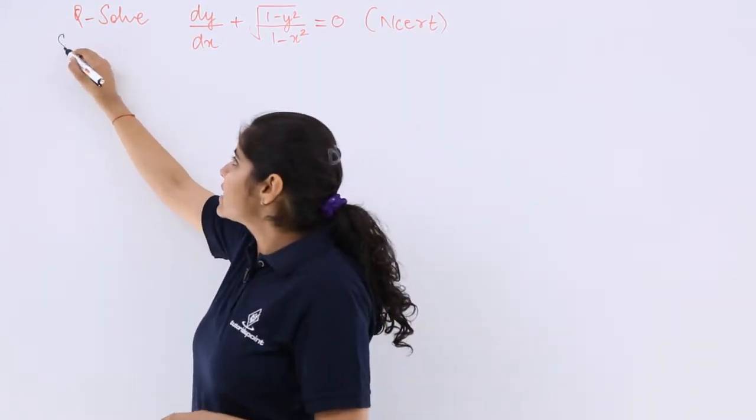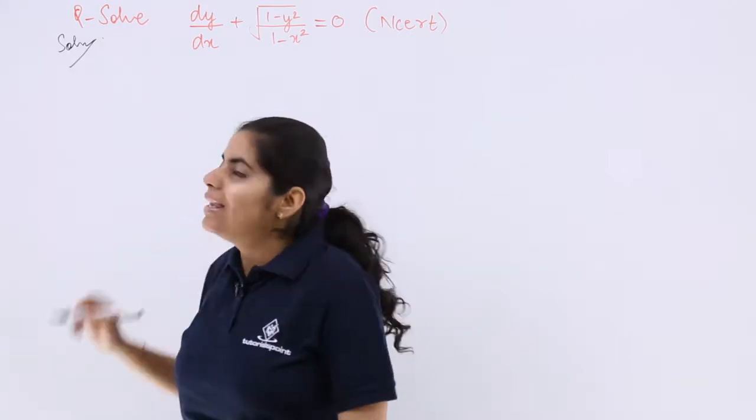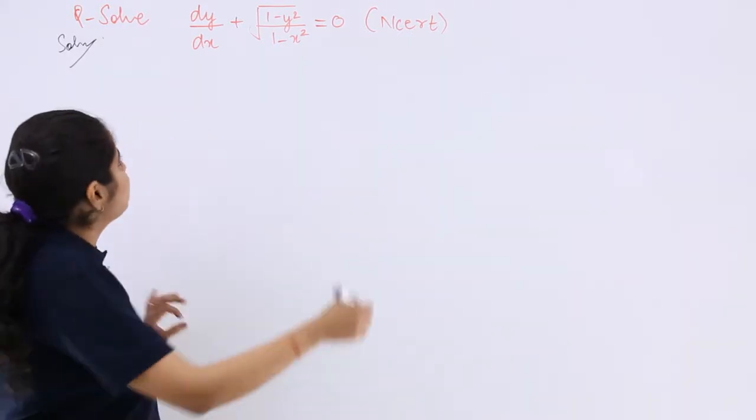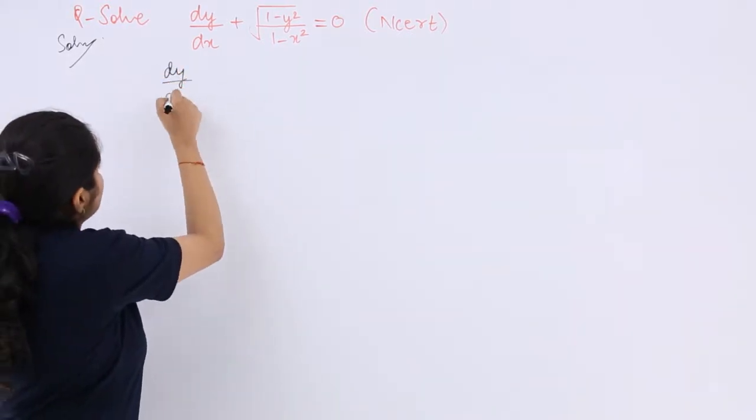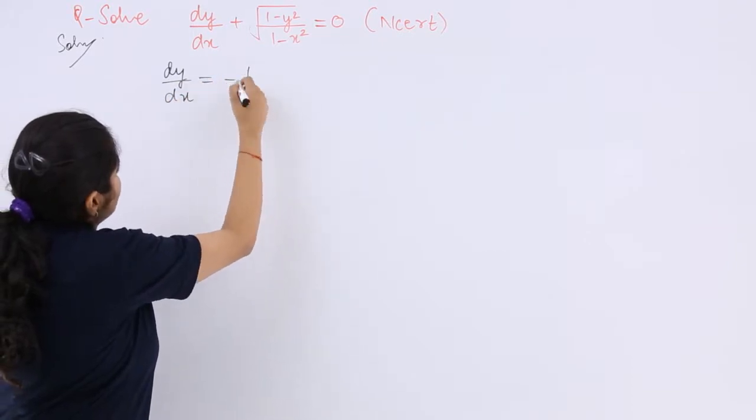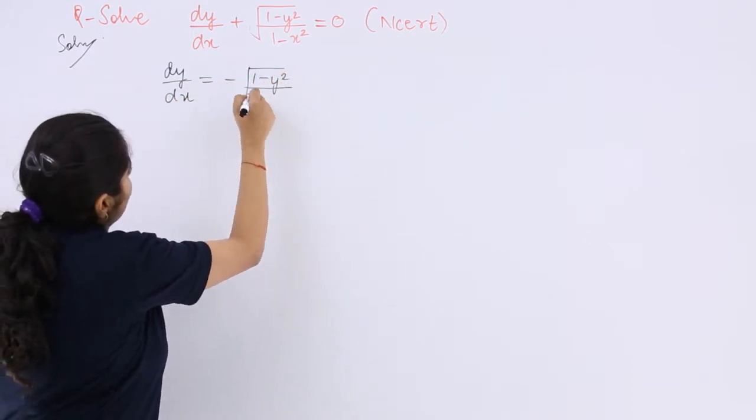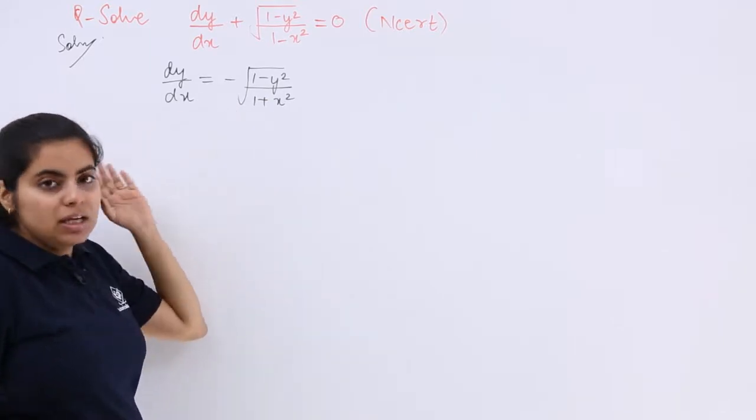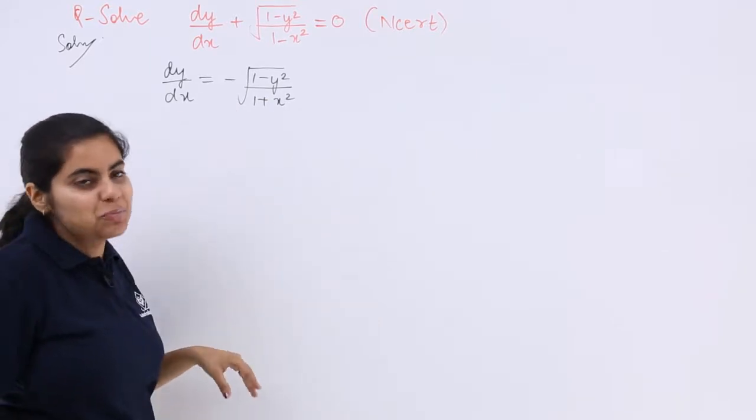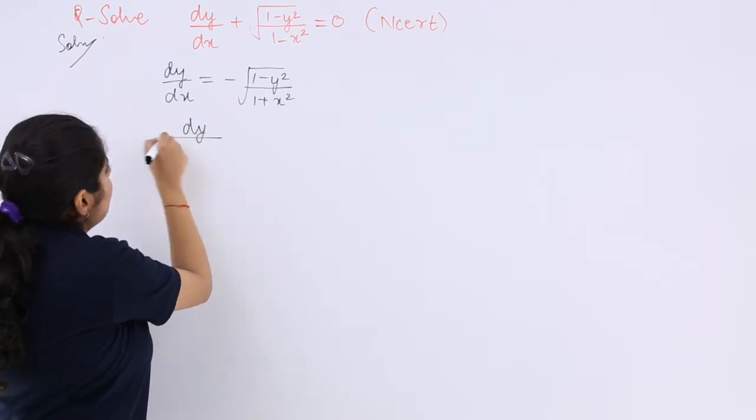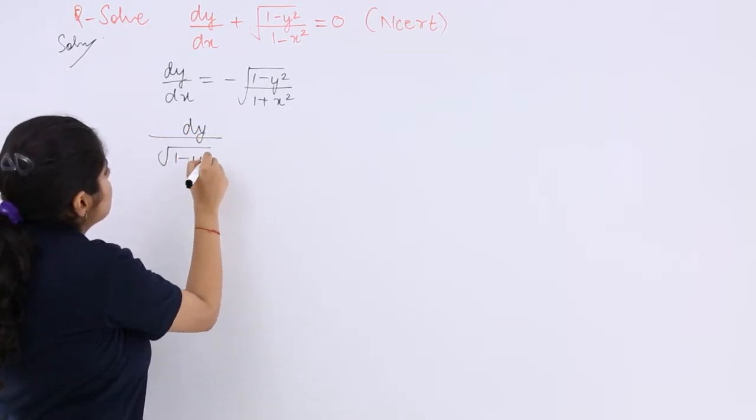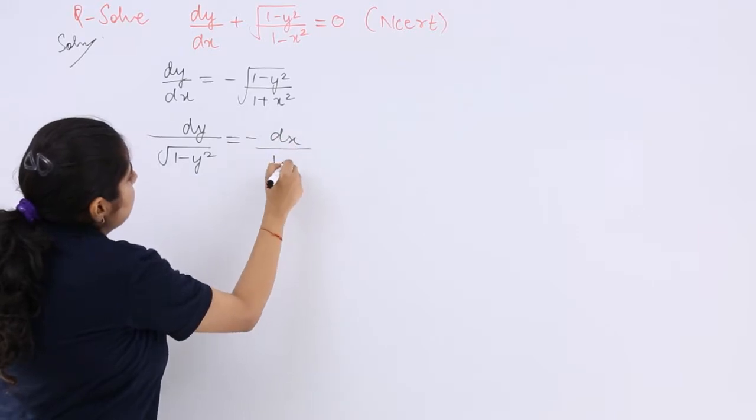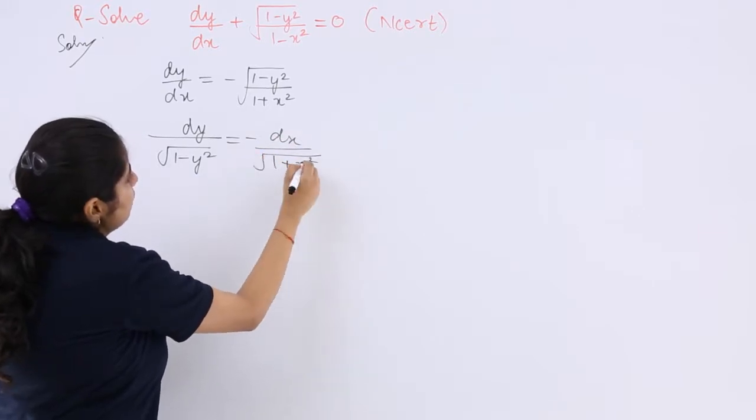So as you can see, I am writing solution for the solution. Let's move with the solution. It says dy by dx is equal to minus under root 1 minus y square upon 1 plus x square. Now x things can be on the one side and y things can be on the other side. So it is dy upon under root 1 minus y square is equal to minus dx upon under root 1 plus x square.